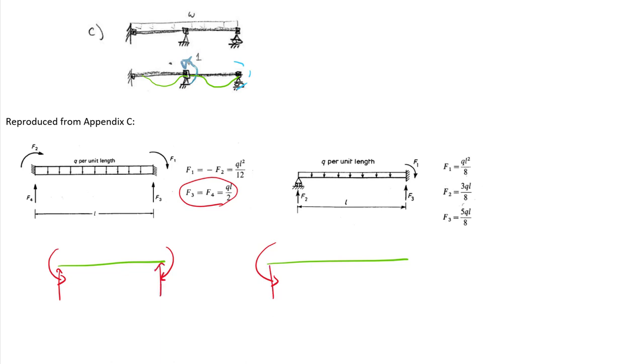Similarly, on the right-hand side, we draw them both upward. And now it's a matter of filling in the values. WL squared over 12 on either end corresponds right here to F1 and F2.